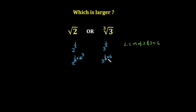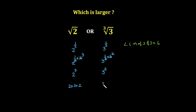6 and 2 cancel, so it will be 2 raised to the power 3, and 3 raised to the power 2. Now 2 raised to the power 3 can be written as 2 times 2 times 2, which is 8, and 3 raised to the power 2 can be written as 3 times 3, which is 9.